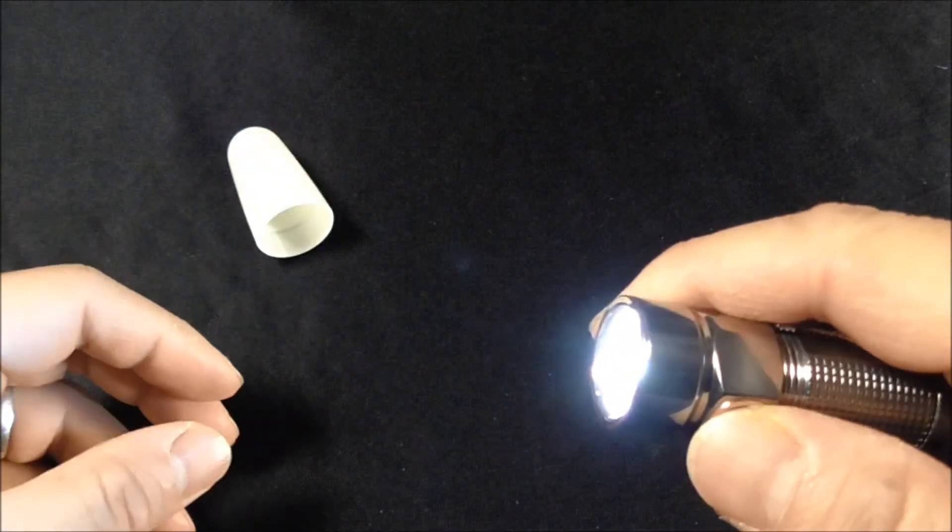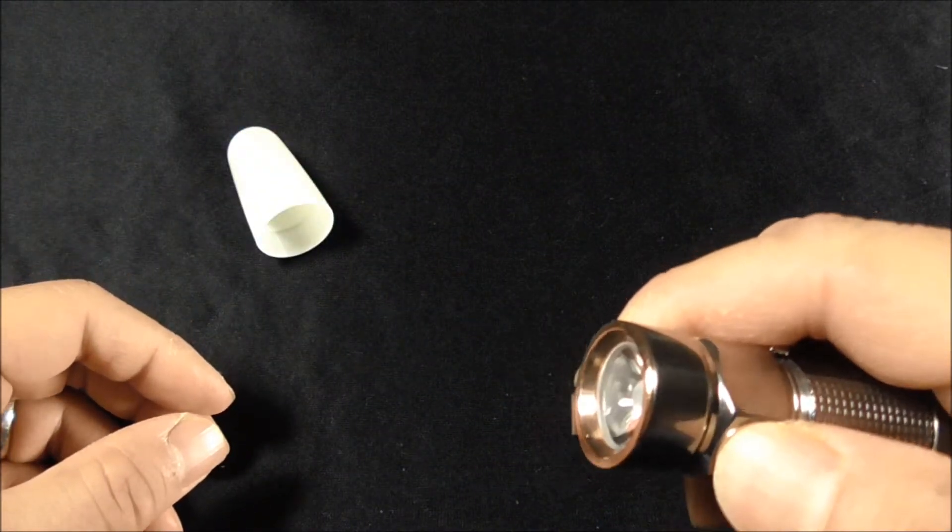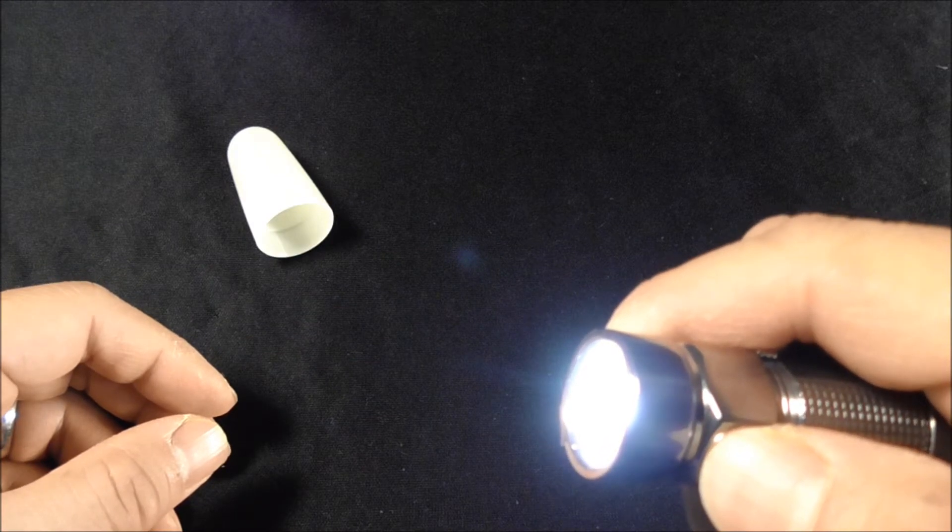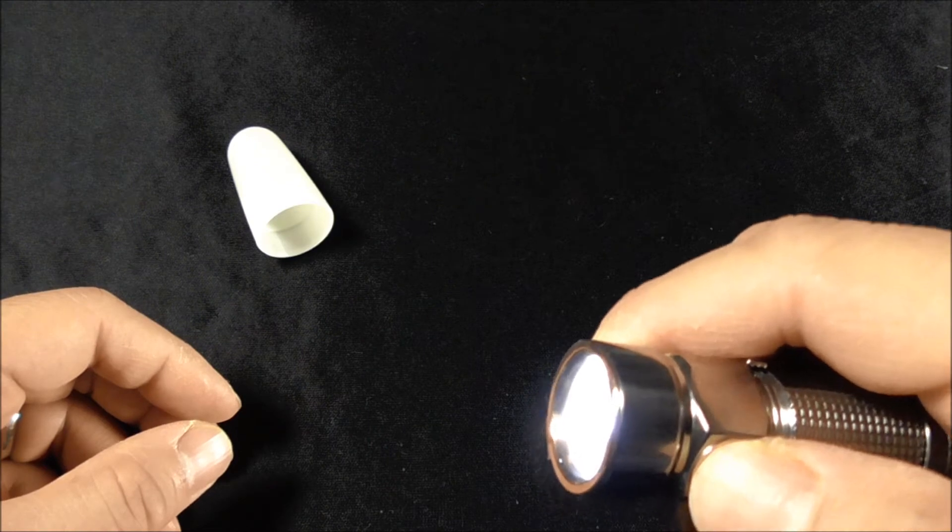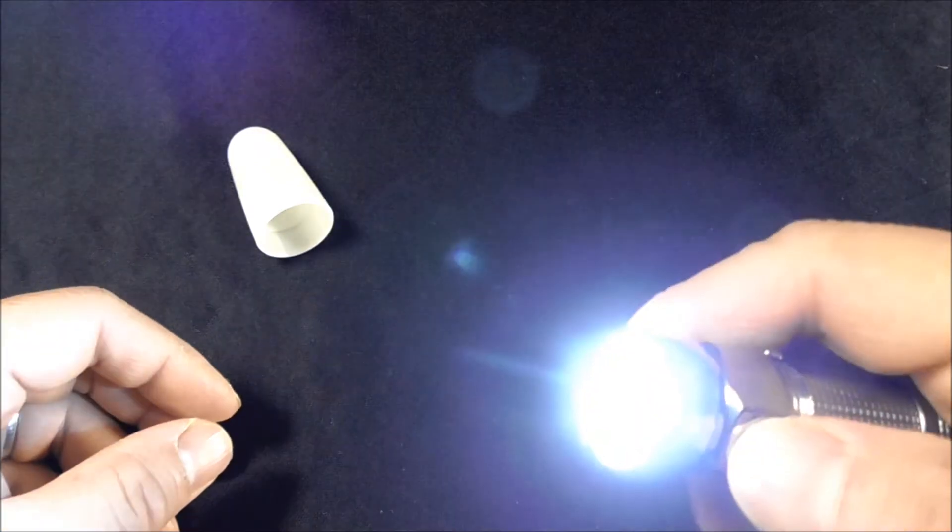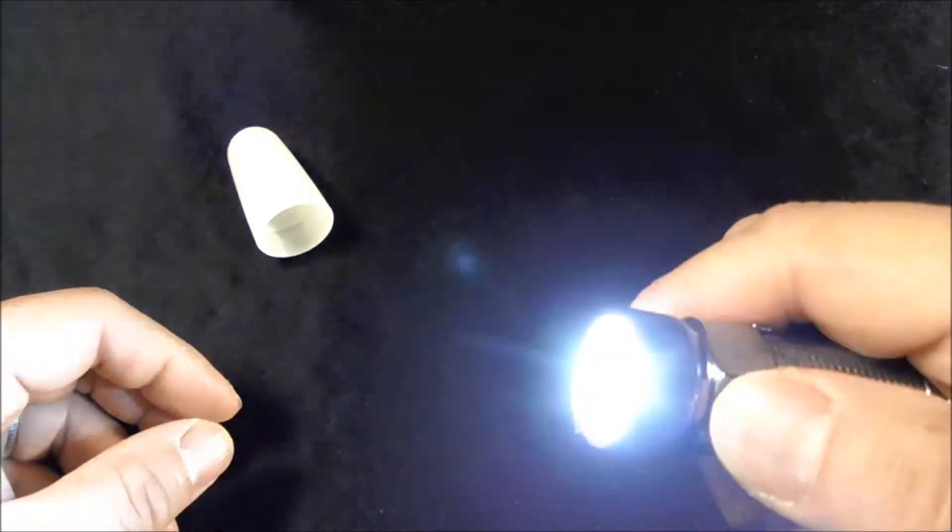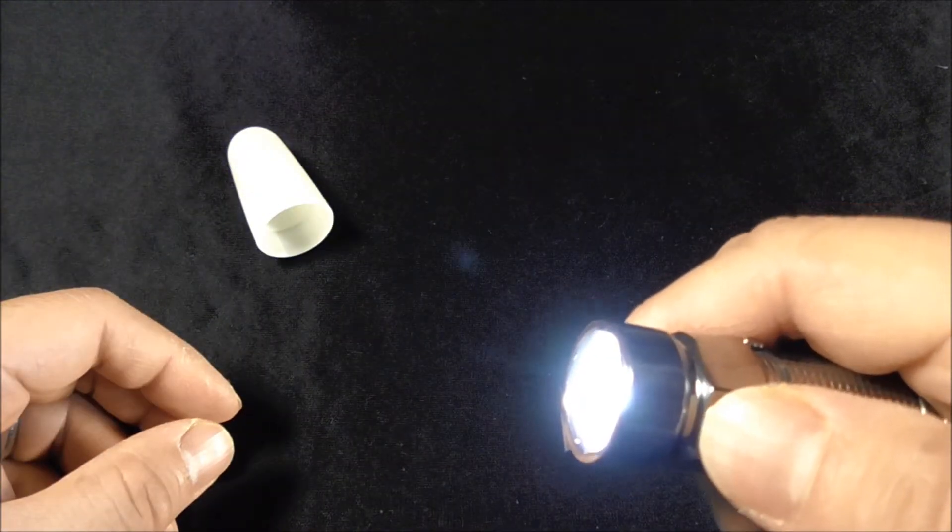I was very happy about that and then I basically checked all the modes. By holding the button, it would change the mode by itself. To activate the strobe light, you have to double-click and that will activate the strobe light. So everything worked pretty well and I was happy.